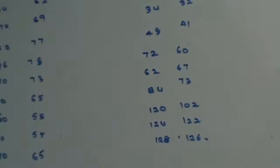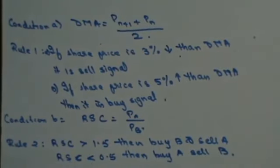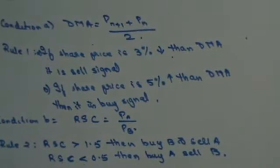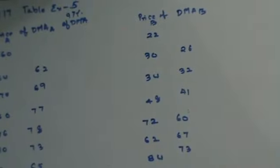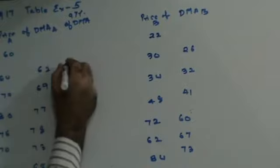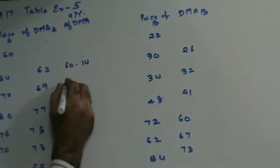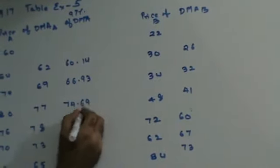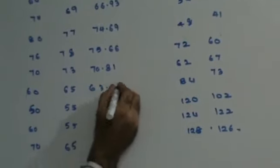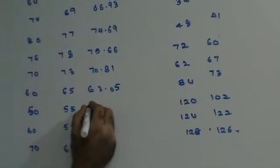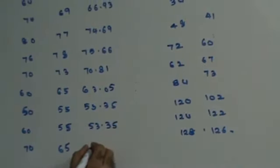Now, Rule 1 says if the share price is 3% lower than DMA, that means 97% of DMA. So let's find 97% of DMA for A: 60.14, 66.93, 74.69, 75.66, 70.81, 63.05, 53.35, 53.35, and 63.05.